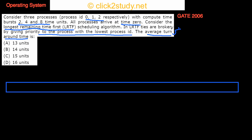Turnaround time is the total time a process takes — that is, the time at which the process completes minus the time at which the process arrives. If you take the average of turnaround times for all processes, you get the average turnaround time.